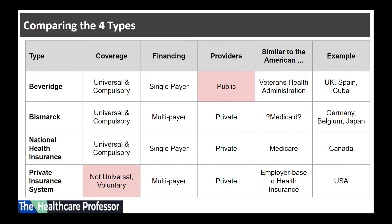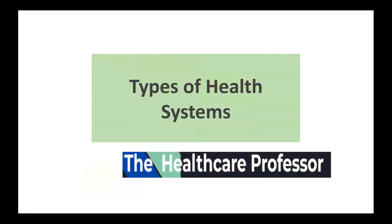This table summarizes the four different models and their different attributes. You can freeze this table to review the matrix comparison. Thank you.